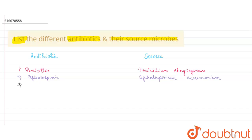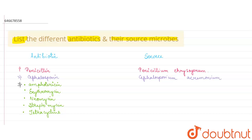Number three, there is a long list: Amphotericin, then Erythromycin, then Neomycin, then Tetracycline, then Vancomycin — all these are basically produced by Streptomyces species.